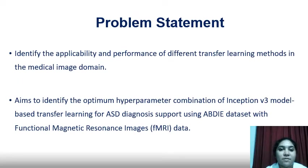Problem statement: this study mainly addresses the problem of identifying the applicability and performance of different transfer learning methods in the medical image domain. The main aim is to identify the optimum hyperparameter combination of an Inception V3 model-based transfer learning approach for ASD diagnosis support using the ABIDE dataset with fMRI data.